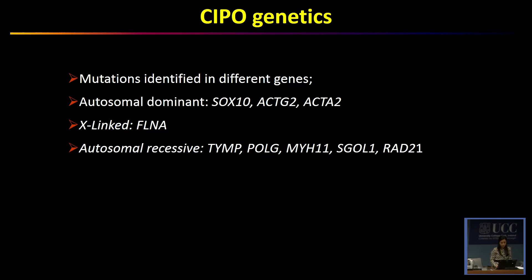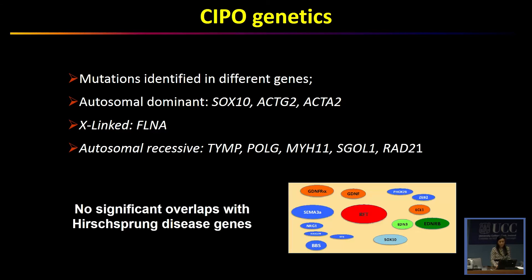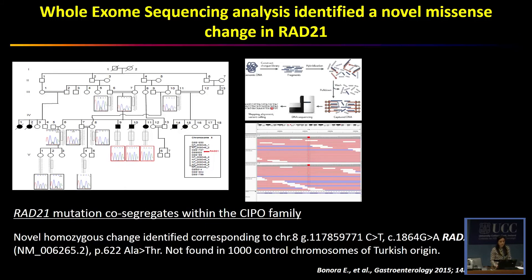But there is no significant overlap with Hirschsprung disease genes. In our lab, we identified, using whole-exon sequencing analysis, a novel missense change in RAD21 in a Turkish family with CIPO patients. This missense change is a substitution of alanine to threonine at position 622, and we also analyzed 1,000 control chromosomes of Turkish origin and did not find the same mutation.